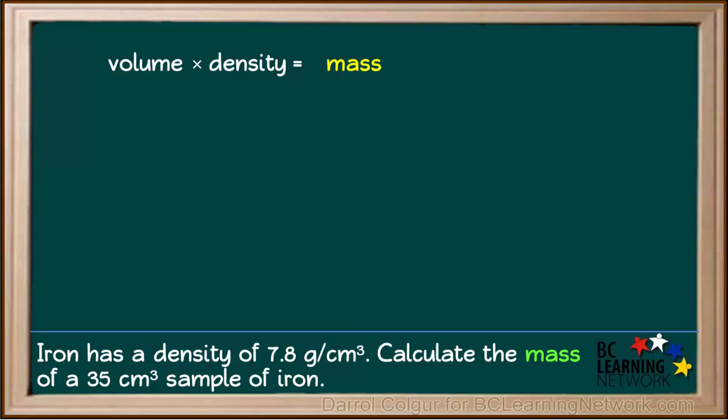Now we will move mass to the left side and volume and density to the right side. This does not change the equation. To get the most familiar form of this equation, we will switch positions of volume and density. Again, this does not change the equation.